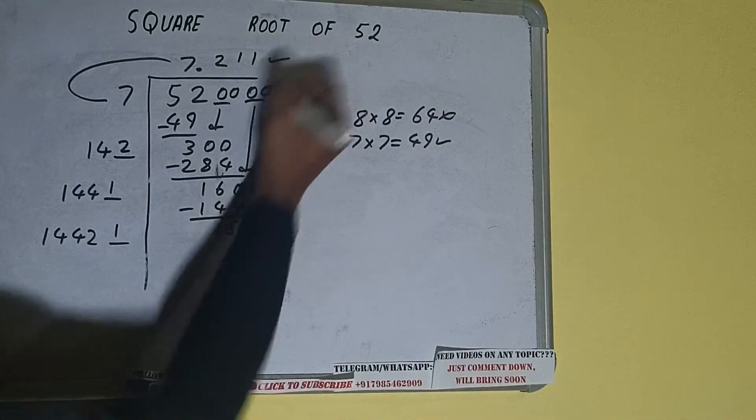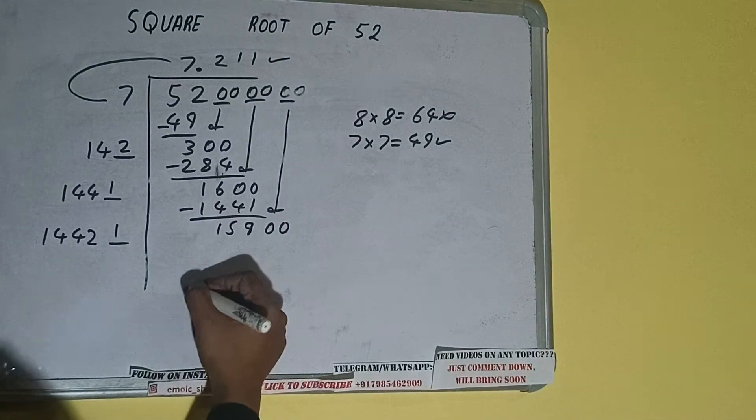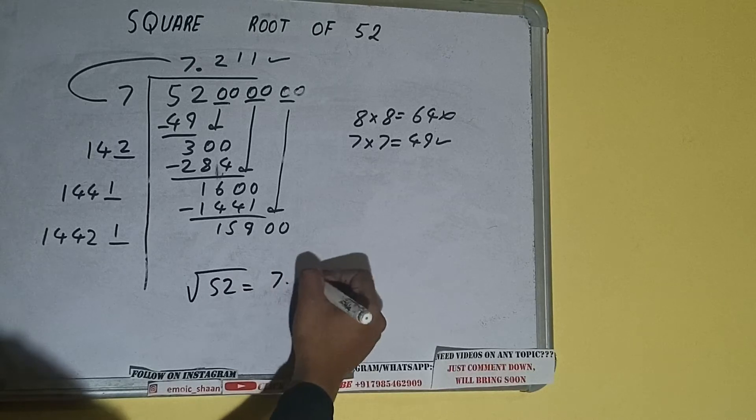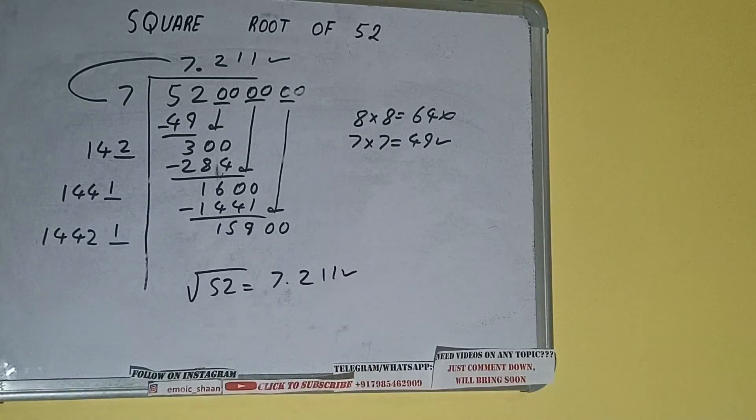Because we got the answer correct up to 3 decimal places. So square root of 52 will be 7.211. That will be the answer.